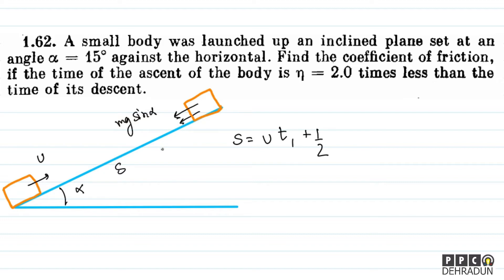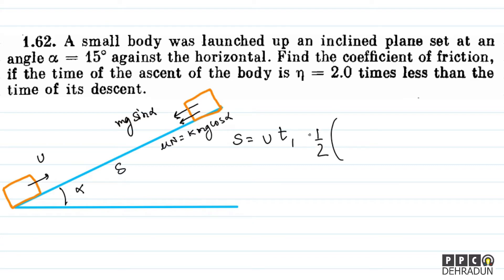The friction force magnitude is mu (k) times mg cos alpha, where k is what we need to find. So the normal reaction is mg cos alpha. The net force becomes mg sin alpha plus k·mg cos alpha, and the acceleration magnitude is g(sin alpha + k cos alpha), acting opposite to the velocity — so I put a minus sign.